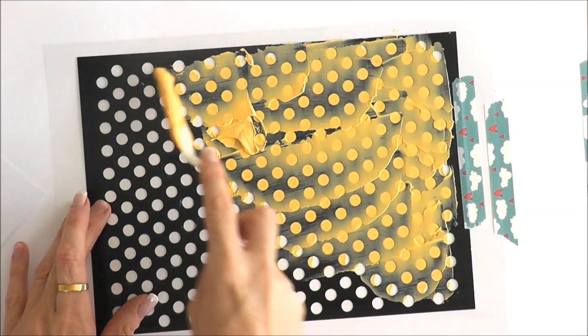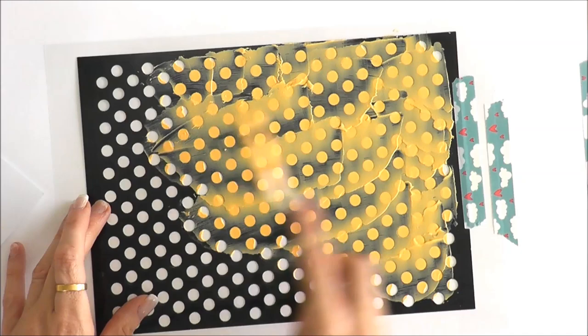You could create, even if you wanted to, a bit of an ombre effect by starting off with one color and then adding another color as you went down the stencil.